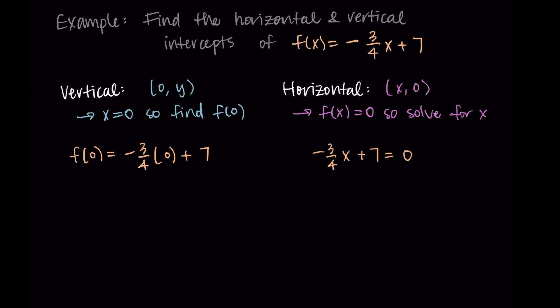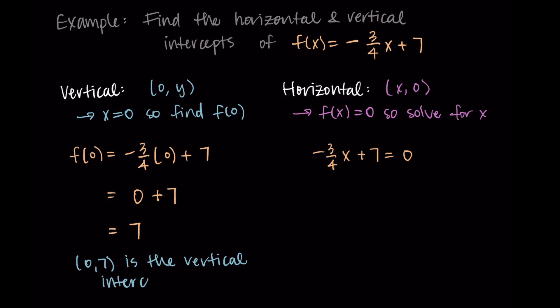For the vertical intercept, we substitute zero for x, so we look at f(0). This means we replace x with zero: f(0) = -3/4 × 0 + 7. Anything times zero is zero, so we have 0 + 7, which simplifies to 7. So seven is the vertical intercept, or written as a point: (0, 7).